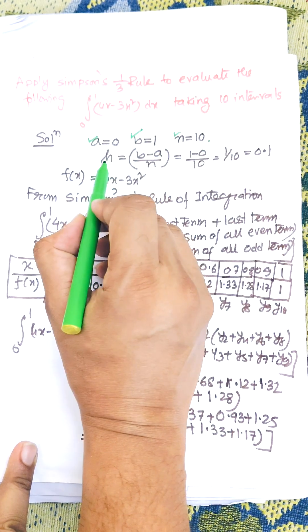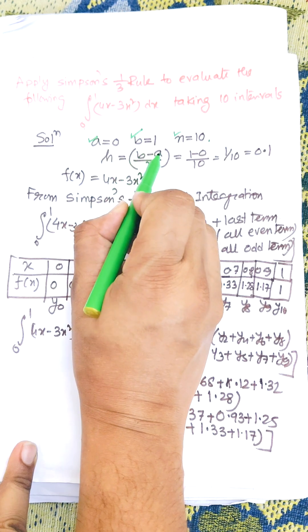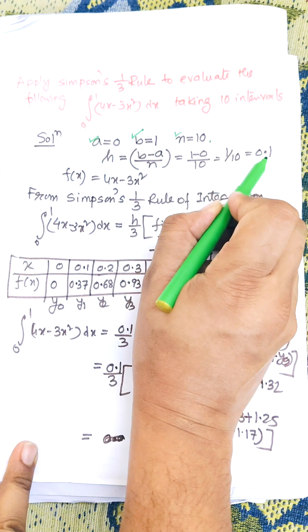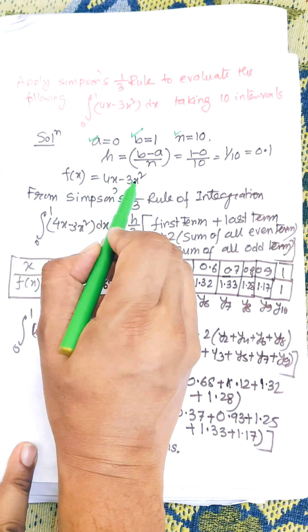First of all we need to find increment h equals b minus a divided by n. That's 1 minus 0 divided by 10, which means 1 by 10 equals 0.1. Here f(x) equals 4x minus 3x squared.